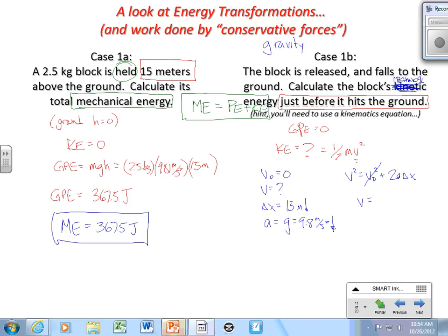That goes away, so we can get that V is the square root of 2 times 9.8 times 15, which equals 17.1 meters per second. If we pop that into here, KE is one half of 2.5 kilograms times 17.1 meters per second squared. Kinetic energy is 367.5 joules, which means mechanical energy is 367.5 joules.